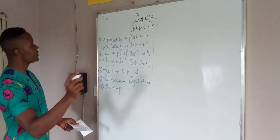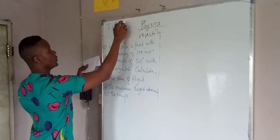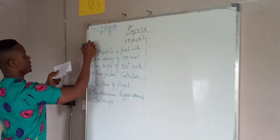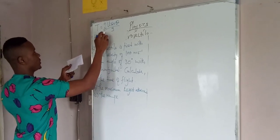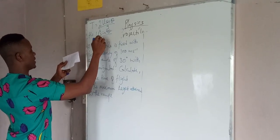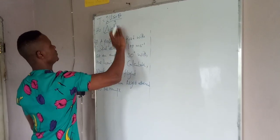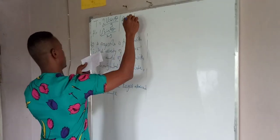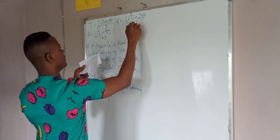Okay, recall our equations: t is equal to 2u sin theta over g, and our maximum height is u squared sin squared theta over 2g, and our range is u squared sin 2 theta all over g.